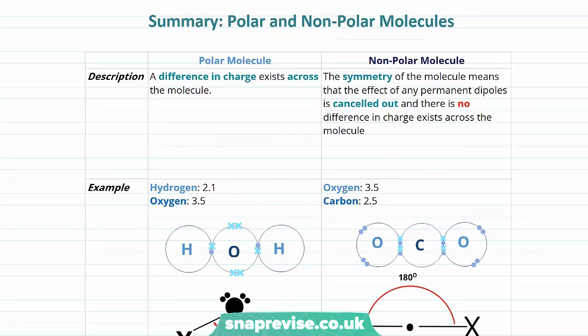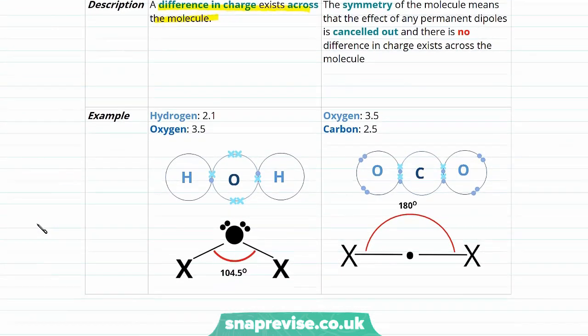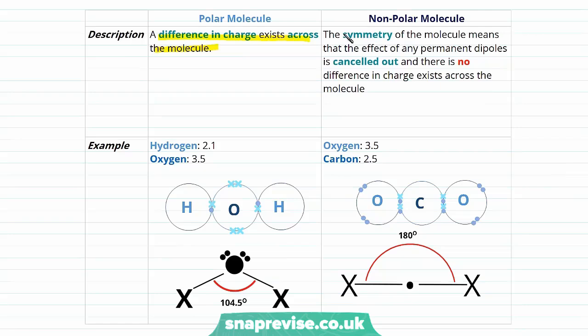For polar molecules, a difference in charge exists across the molecule giving an overall permanent dipole. Water is an example - hydrogen has electronegativity 2.1 and oxygen 3.5, and since the molecule is not symmetrical the permanent dipoles are not cancelled out. For non-polar molecules, the symmetry means the effect of any permanent dipole is cancelled out. Carbon dioxide has a symmetrical linear shape and although its individual bonds are polar, the permanent dipoles cancel and there is no overall difference in charge.